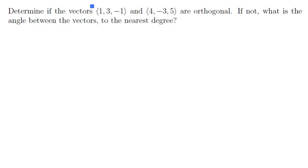Let's start off by naming these two vectors. We'll call the first vector A, and the second vector B. Now, we'll test whether they're orthogonal by computing their dot product. In component form, we have the first vector is 1, 3, minus 1, and the second vector is 4, negative 3, 5.